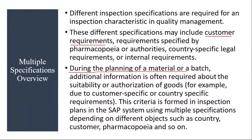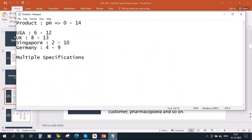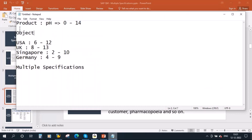During the planning of a material or a batch, additional information is often required about the suitability or authorization of goods. This criteria is formed in inspection plans in the SAP system using multiple specifications, depending on different objects such as country, customer, pharmacopoeia, and so on. In the example given, the object is country — based on the country, we have multiple specifications: for USA a different specification, for UK a different specification, for Singapore a different specification, and for Germany a different specification.